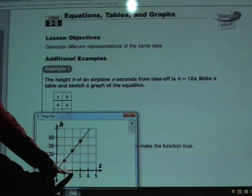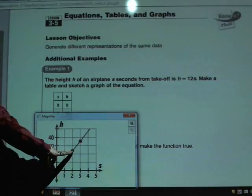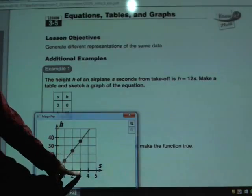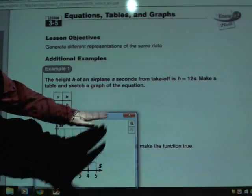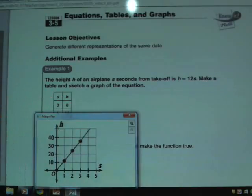Then 2, 24, so over to 2 and up to 24. And then 3, 36, over to 3 and up to 36. Connect my points there, and there's the graph of my equation, h equals 12s, or as we changed it, y equals 12 times x.